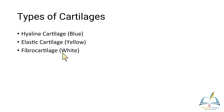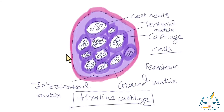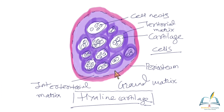The first type is hyaline cartilage. Its peculiarity is that the ground substance and collagen type 2 fibers have the same refractive index, so you do not see any fibers in this cartilage. The ground matrix is rich in chondroitin sulfates and hyaluronic acid. The ground substance and collagen fibers are so homogeneous that it appears like glass — this glass-like appearance gives it the name hyaline cartilage, as 'hyalos' means glass-like.